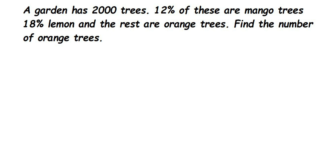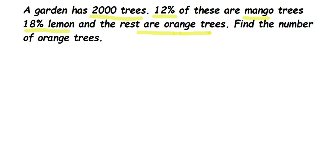Here's a question on comparing quantities. A garden has 2000 trees; 12% of these are mango trees, 18% are lemon trees, and the rest are orange trees. We have to find out the number of orange trees.